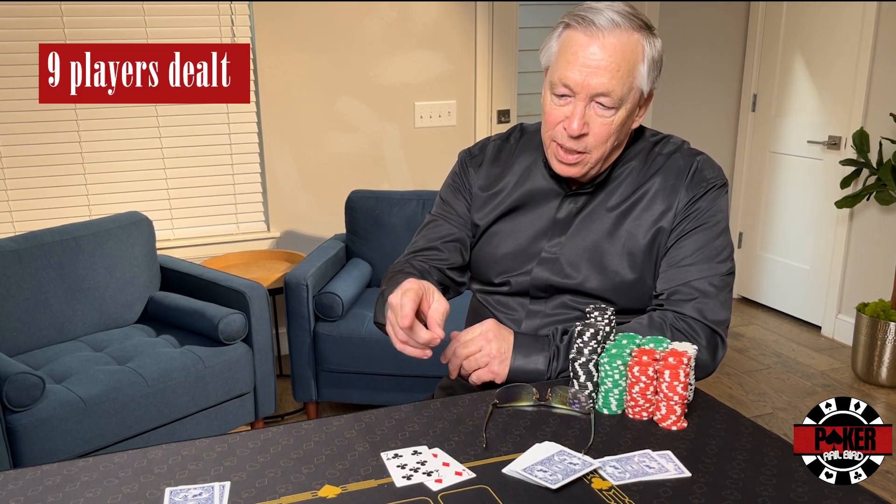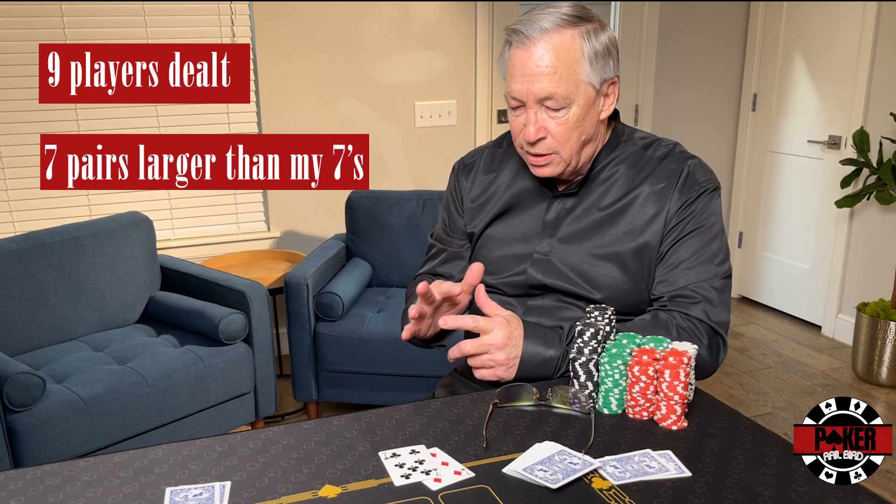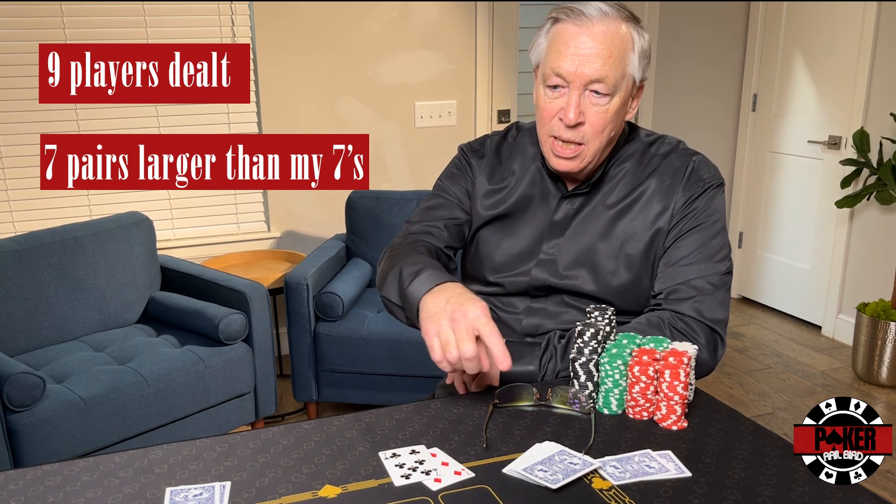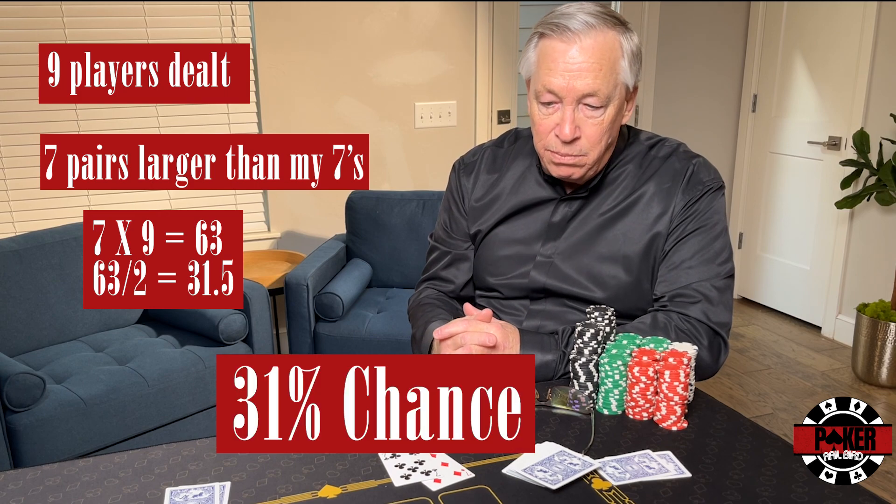We've got nine players dealt in. How many pairs larger than mine? There's eights, nines, tens, jacks, queens, kings, and aces - so seven pairs. Seven times nine is 63, divided by two would be 31 percent.